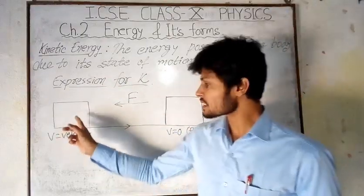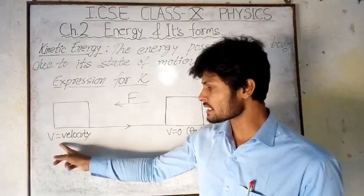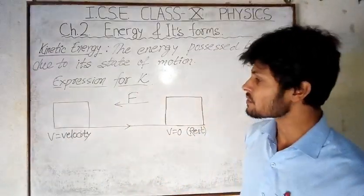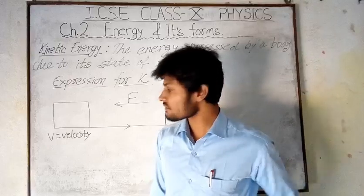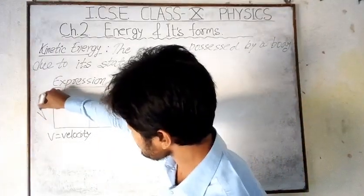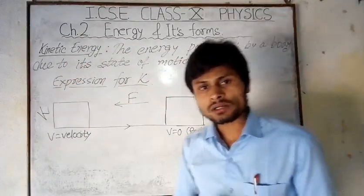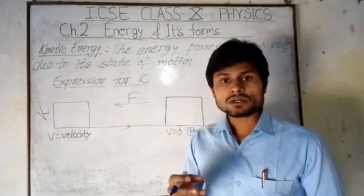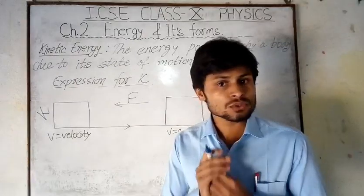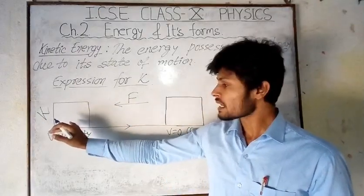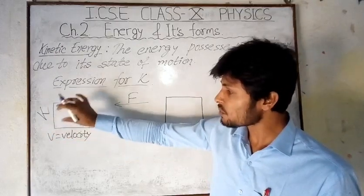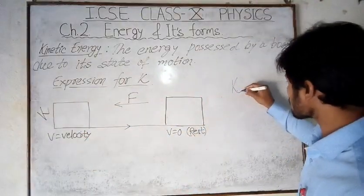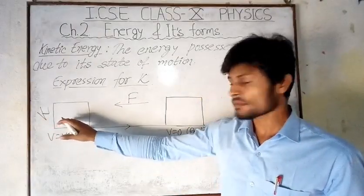Now we can derive the expression for kinetic energy K. Suppose an object is moving with velocity v — that means initially it is in motion, so it has kinetic energy K. As we all know, the amount of energy a body has is equal to the amount of work that body is capable of doing. This K is the magnitude of the total kinetic energy of the body, and because of this energy it is capable of doing work.